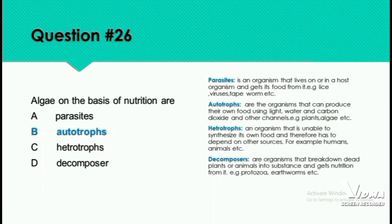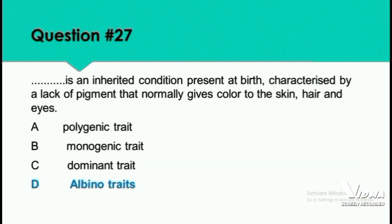Question 27: What is the inherited condition present at birth characterized by a lack of pigment that normally gives color to the skin, hair, and eyes? This condition is called albinism.